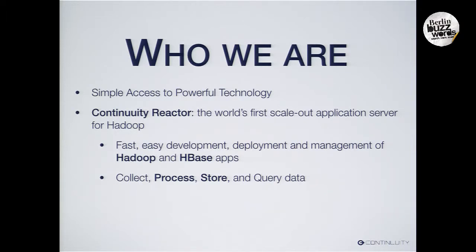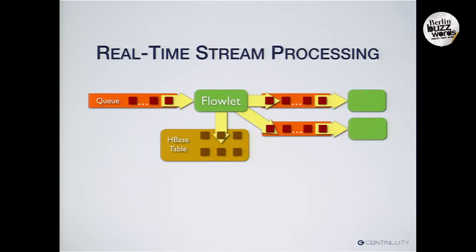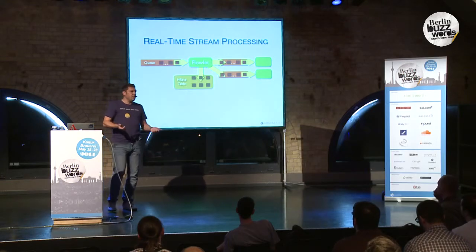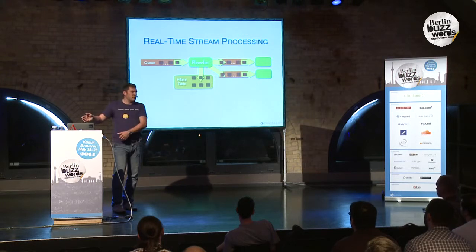What do you do in a big data application? You mainly do four things: you collect data, you process it, you want to store the results of the processing, and you want to make it available for querying. In this talk, I am going to focus on one particular type of processing, which is real-time stream processing. Here we operate over real-time streams of events, and a stream processor typically consists of a bunch of agents or servers. Each of these processes has an input queue that it reads events from, does some processing, may store or read some data, and then emits new events on its output queues for the downstream processing of other agents.